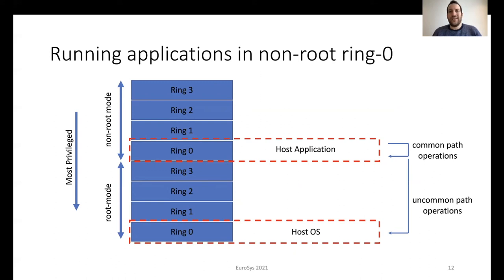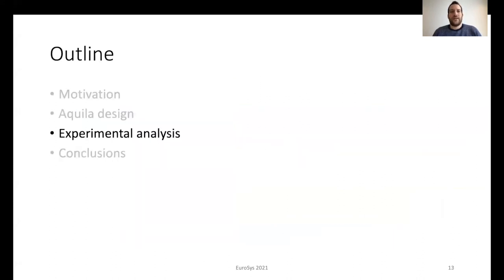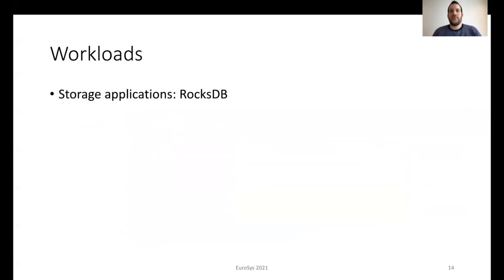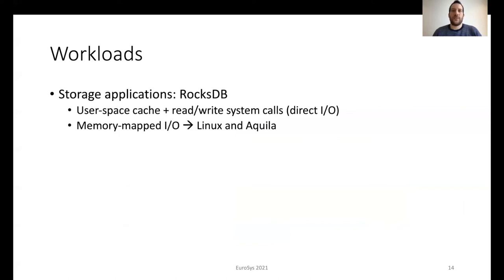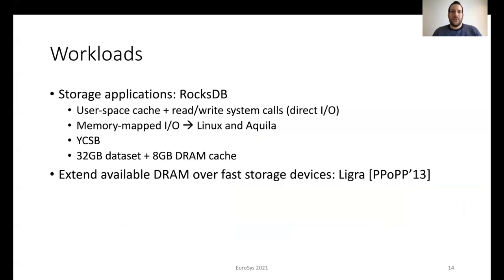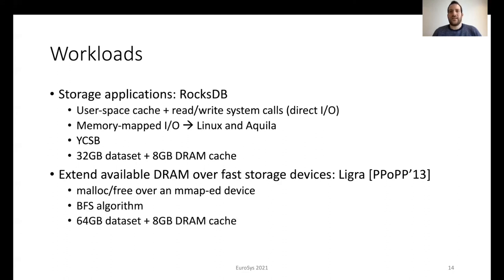More details on the common and uncommon path operations and other implementation details can be found in our paper. For storage applications, we use RocksDB, a state-of-the-art persistent key-value store from Facebook. The common configuration is to use a user space cache and read-write system calls to interact with storage devices. RocksDB also provides an option to use memory-mapped I/O — in this case, we use Linux mmap and Aquila. We use YCSB with a 32 GB dataset and 8 GB of DRAM cache. Additionally, we evaluate Aquila in terms of extending the available DRAM over fast storage devices using Ligra, a graph processing framework. To achieve that, we translate all malloc and free calls to operate over a memory-mapped storage device rather than the DRAM heap. We use the BFS algorithm with a 64 GB dataset and 8 GB of DRAM cache.